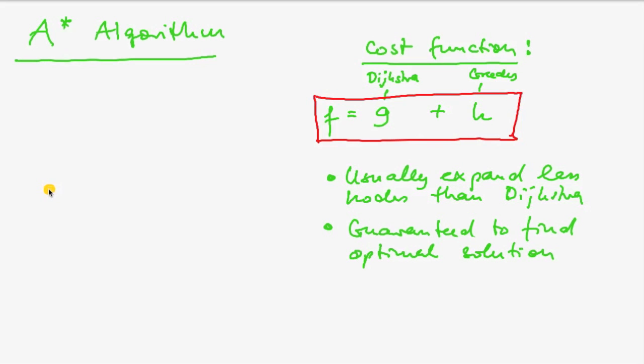So now at any point in the algorithm, when we want to go from the start to the goal, and we have to decide if we should add this node, then we'll have to compute the value of the function f, which is g plus h.